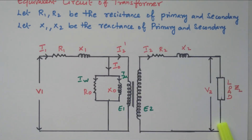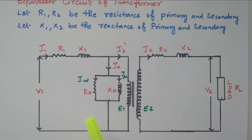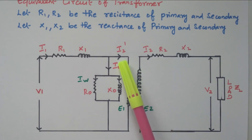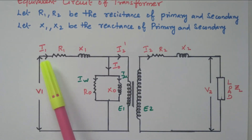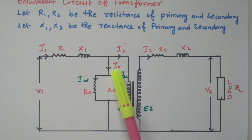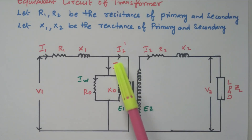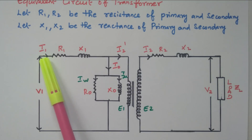When the secondary is loaded, secondary current I2 flows through the secondary winding, causing additional current to flow through the primary winding as well, called I2 dash. I2 is the current flowing through the secondary winding when loaded. Due to the loaded condition, some more current flows through the primary, that is I2 dash. So I1 is the total primary current, which is the vector sum of I0 and I2 dash: I0 due to no-load condition, I2 dash due to loaded condition. I2 is the current flowing through the secondary winding.